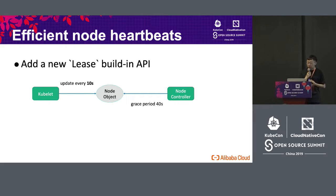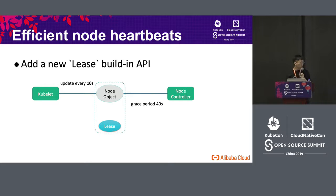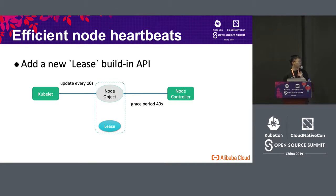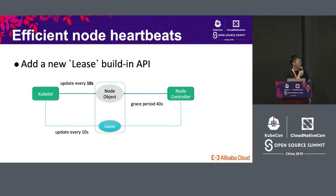In Kubernetes, in order to tackle this problem, a new Lease built-in API was added for the node heartbeats. We must know the latest status of this node — we can just judge whether it is ready or not. To the node object, we can add a lease object. Each node has its own object and also has a lease. With this lease, the Kubernetes heartbeat can be modified into an update of the lease every 10 seconds. The right controller can then judge whether this node is available or not.